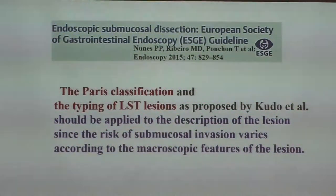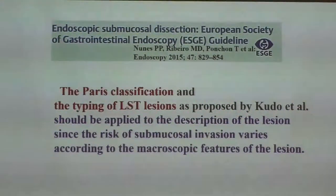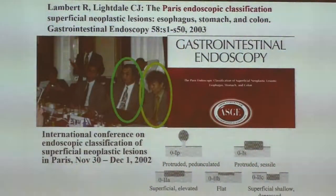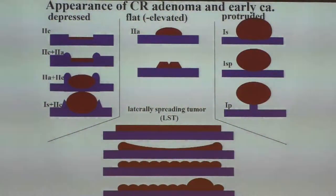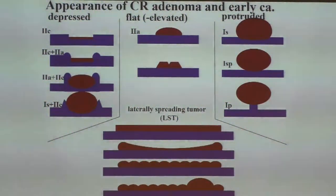According to ESG guidelines, the Paris classification and the typing of LST lesions should be applied to the description of the lesion, since the risk of submucosal invasion varies according to the macroscopic features of the lesion. Talking about Paris classification, it is my honor that I was one of the members. The appearance of colorectal adenoma and early cancer can be roughly divided into three: depressed, flat, and protruded. Large flat adenomas are called lateral spreading tumors, or LSTs.